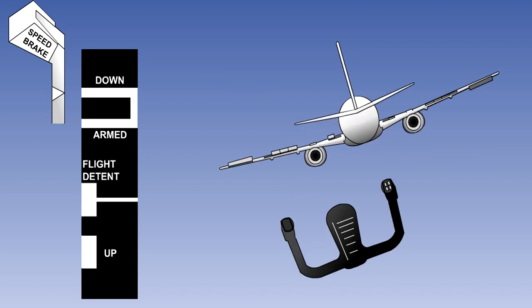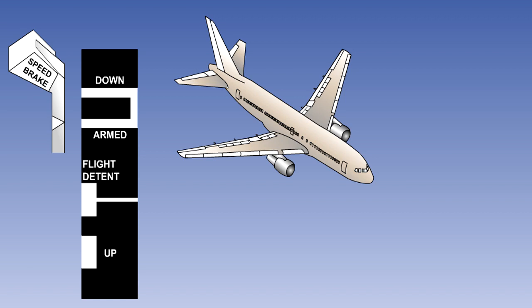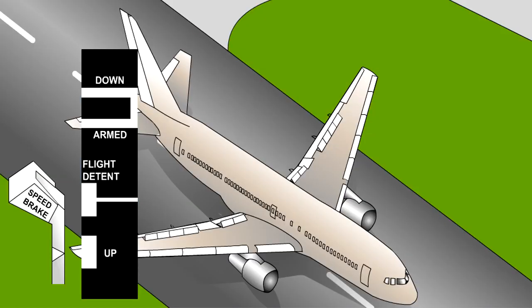This applies both on the ground and in flight. To move the lever from down to the arm position, it has to be raised up out of a gate. The arm position is selected on approach. With the lever in this position, the automatic speed brake system is armed. When the aircraft touches down and certain parameters are met, the lever will move automatically to the up position and all panels — both flight and ground spoilers — will fully extend. We will discuss the system fully later in the lesson.